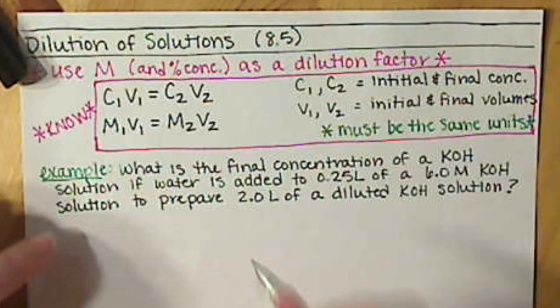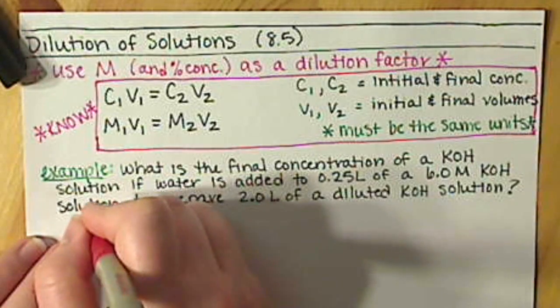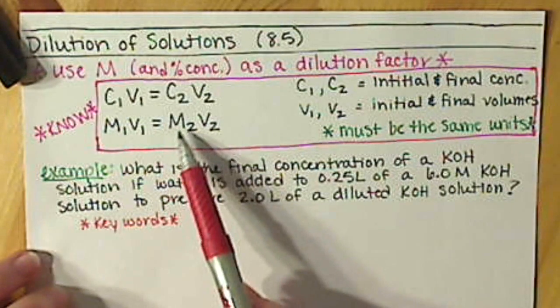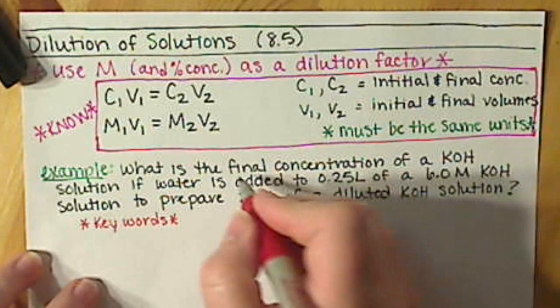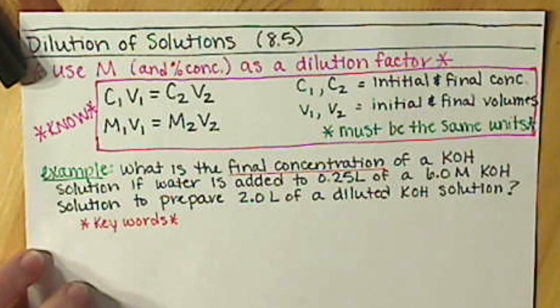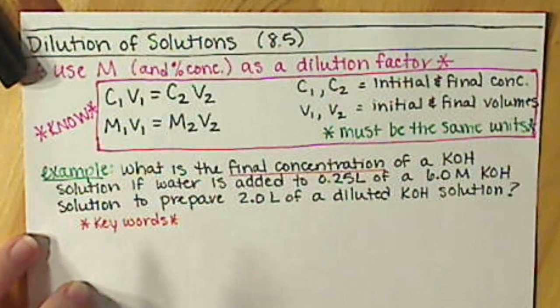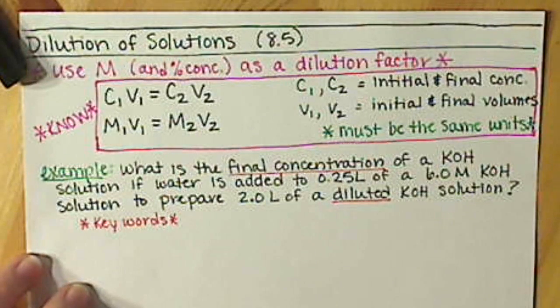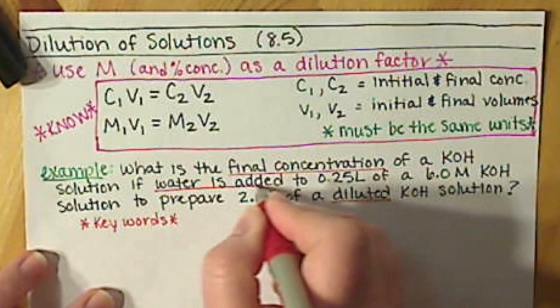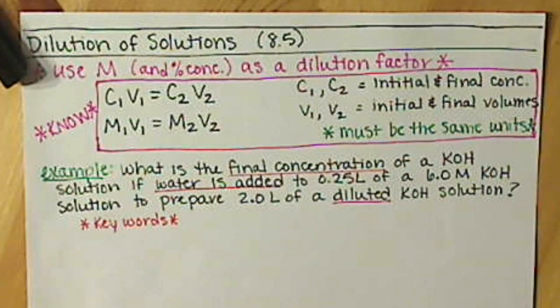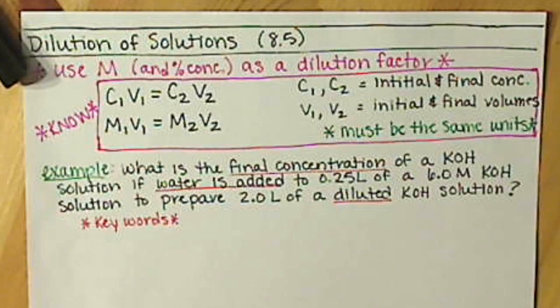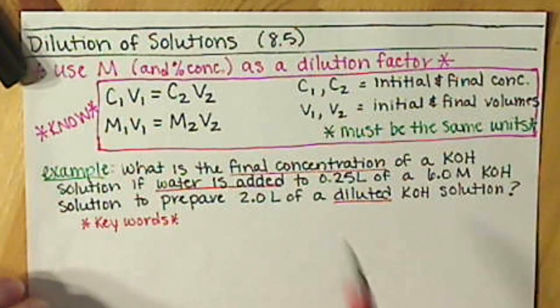Before we tackle this problem, I'd like to point out some key words that are going to let you know when you're working through word problems that you're going to use this equation. First off, anytime that you see 'final concentration,' that's definitely an indication that you're using the dilution equation. Also we have the word 'diluted' here, so that should also be a clue. And anytime that you're going to be adding water, water is our solvent, so basically all you're doing is diluting this solution. A dilution equation is not a chemical process, it is a physical process. We are just diluting that solution down.